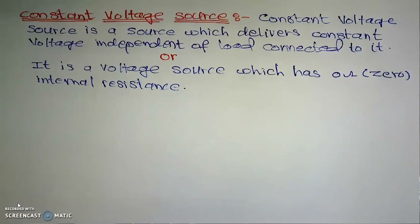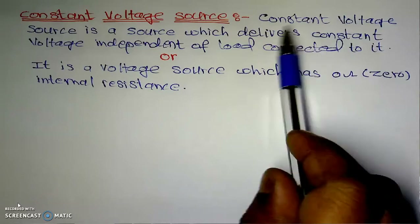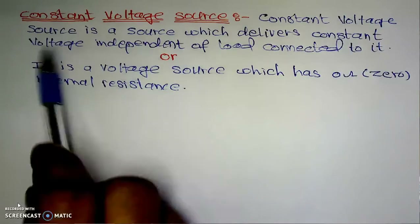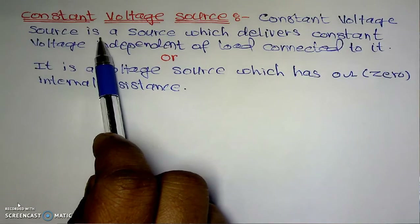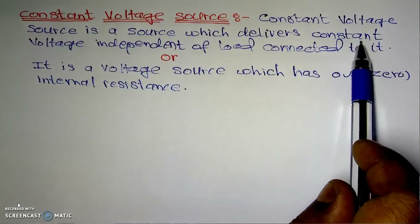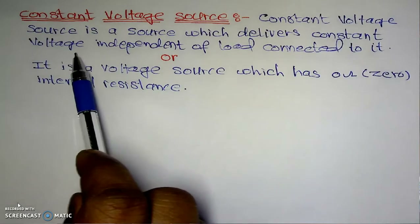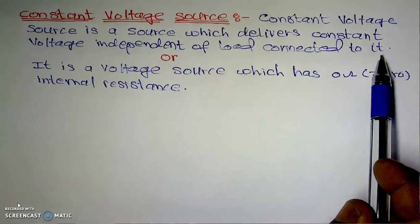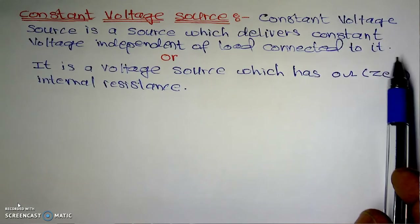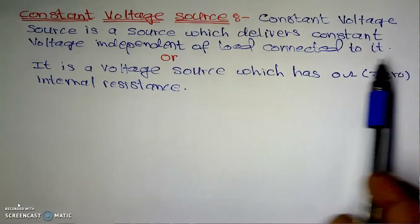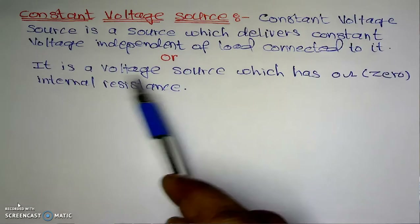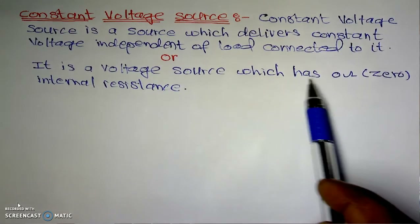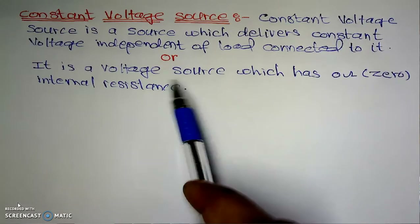As per the definition mentioned in this video, a constant voltage source is a source which delivers constant voltage independent of the load connected to it. Alternatively, it is a voltage source which has zero internal resistance.